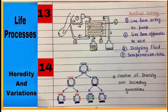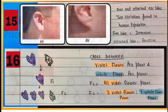Diagram 14 is showing creation of diversity over succeeding generations.